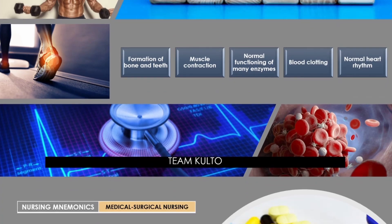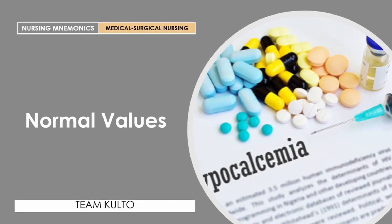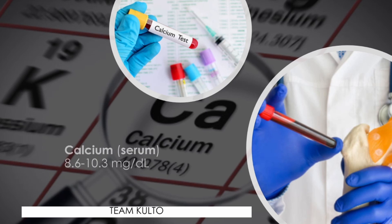Now for normal values — remember this because it frequently comes out on exams. The normal calcium serum level is 8.6 to 10.3 milligrams per dL. Hypocalcemia is diagnosed when the serum level is below 8.6 milligrams per dL.